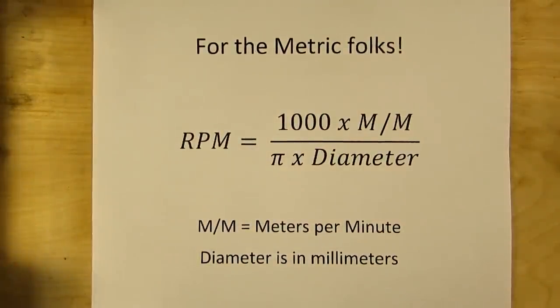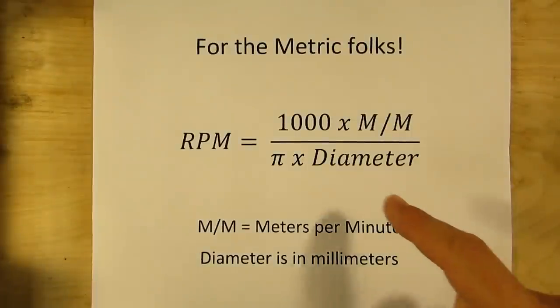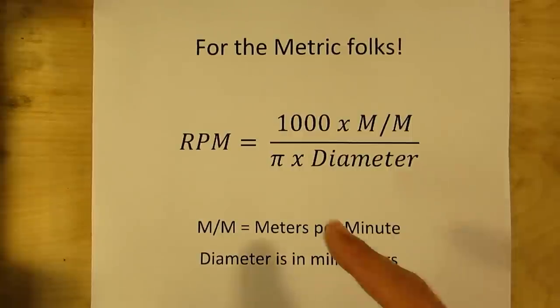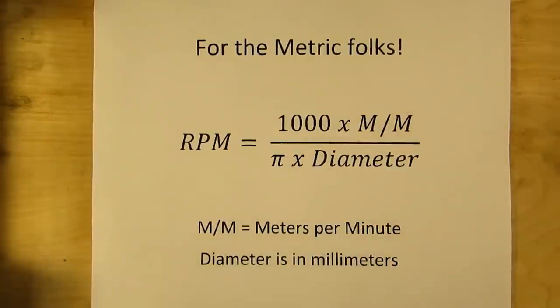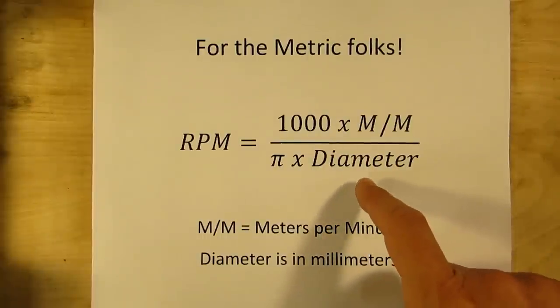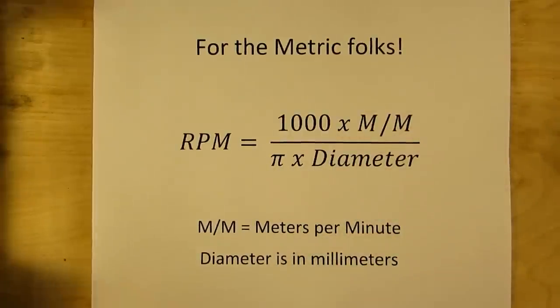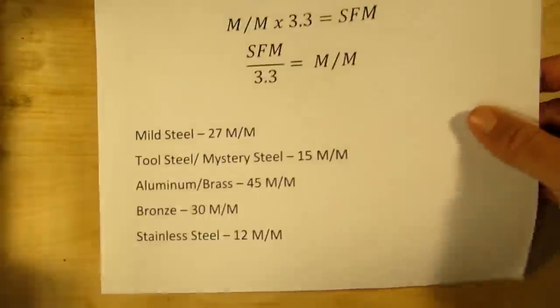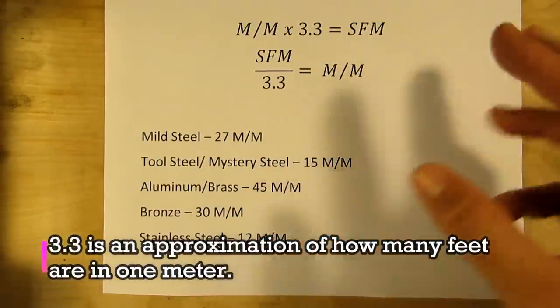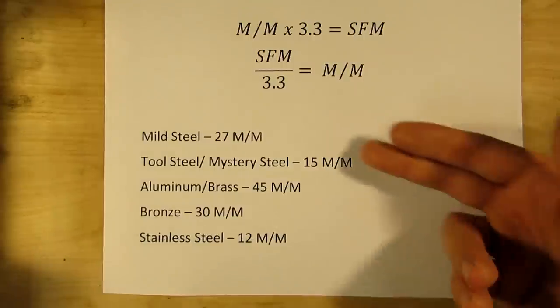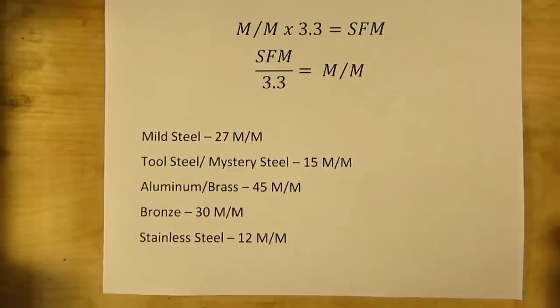Now don't worry metric folks, I haven't forgotten you. There is a formula for you guys too. Your cutting speed is expressed in meters per minute and the diameter is going to be given in millimeters. So your rpm is going to be equal to 1000 times the meters per minute divided by pi times the diameter. So 1000 times the meters per minute is basically giving you millimeters per minute, and remember your diameter is going to be based in millimeters. So how does that actually affect your cutting speed? You can take my SFM numbers from before and divide them by 3.3 to get your meters per minute. That's a nice approximation, gets you pretty close. So these are those numbers converted into metric for you: 27 for mild steel, 15 for tool steel and mystery steel, 45 for aluminum and brass, 30 for bronze, and stainless steel is 12.